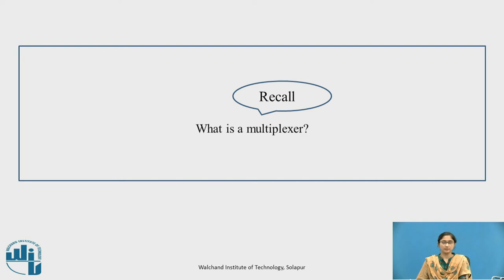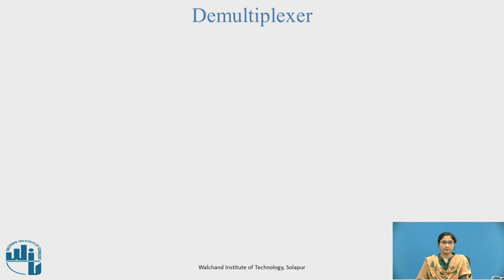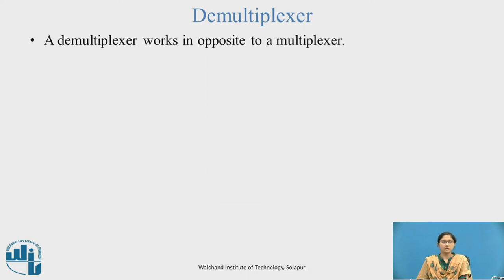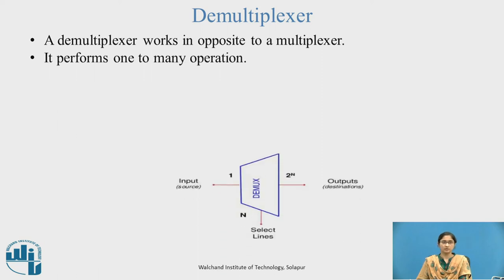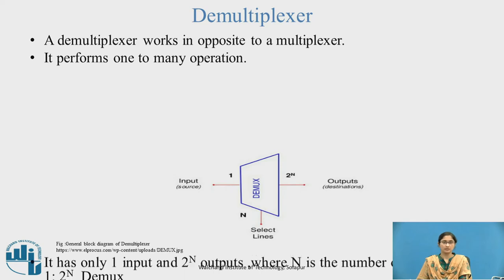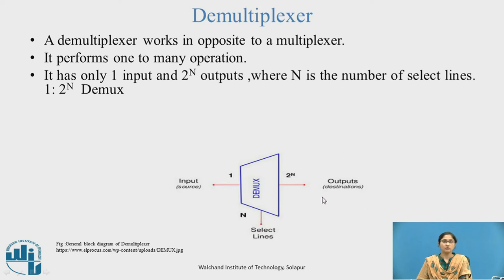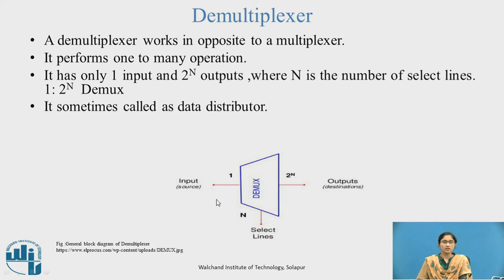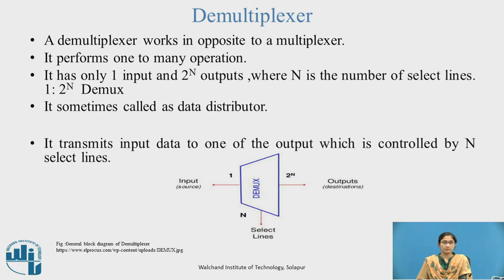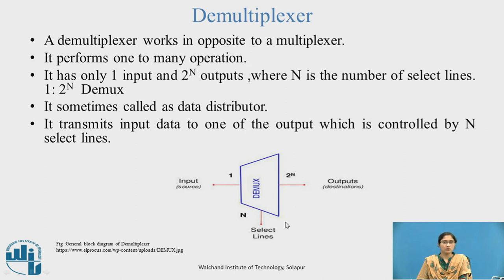First, recall what is a multiplexer — it performs a many-to-one operation. A demultiplexer works opposite to a multiplexer; it performs a one-to-many operation. It has 1 input and 2 raised to n outputs, where n is the number of select lines. It is also called a data distributor, because one input data acts as a source and several outputs act as destinations. It transmits input data to one of the outputs, controlled by n select lines.